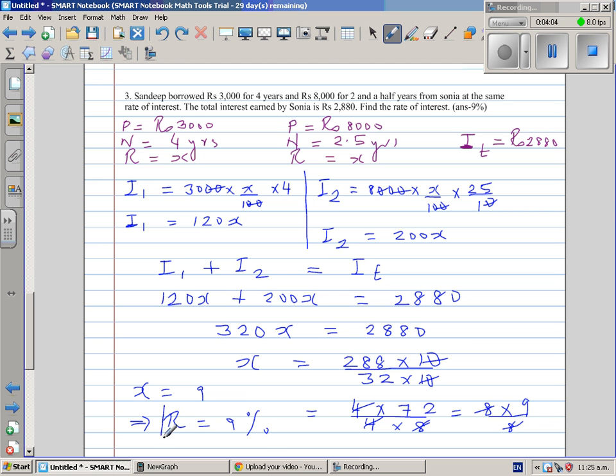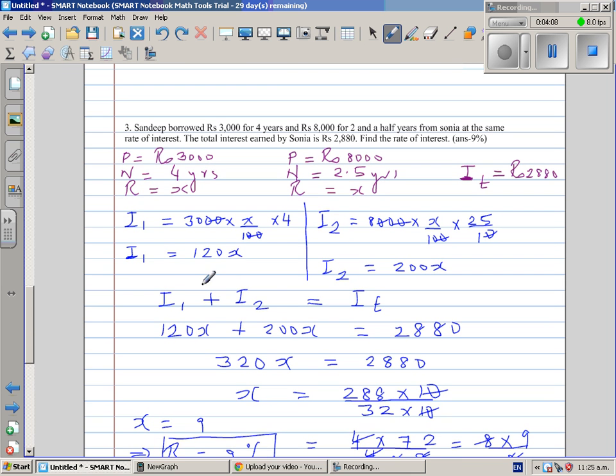The rate of interest is 9%. Let's confirm whether the answer is right. Your I1 would be 120x, which is 120 times 9. 12 times 9 is 108, so this is 1,080.